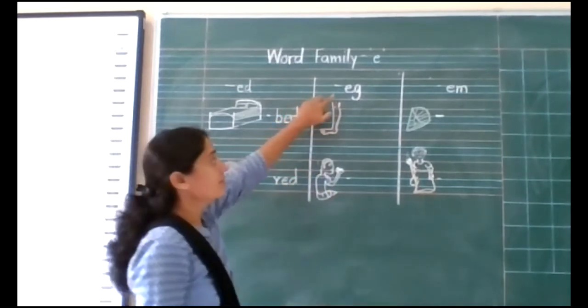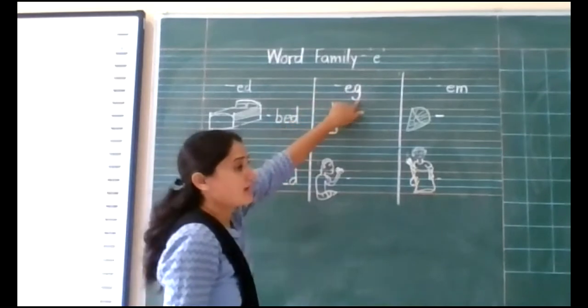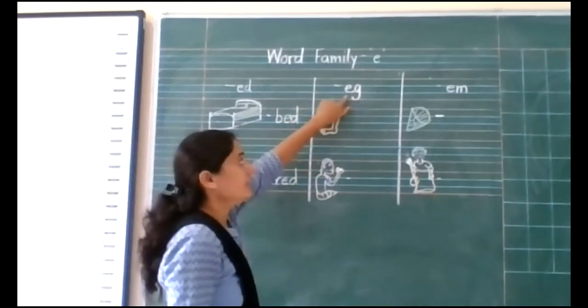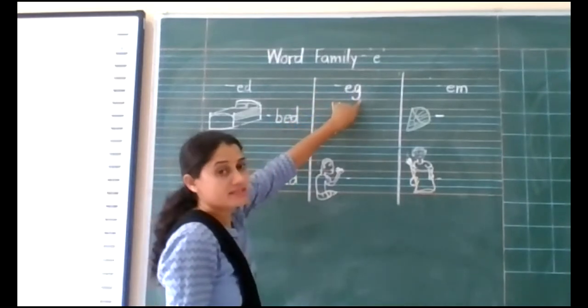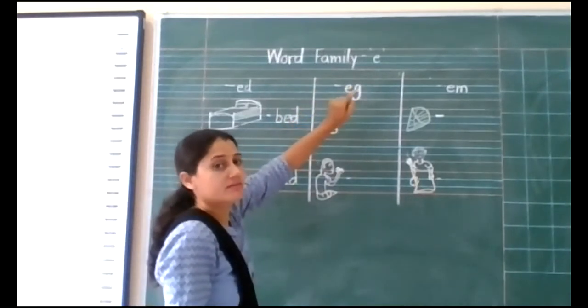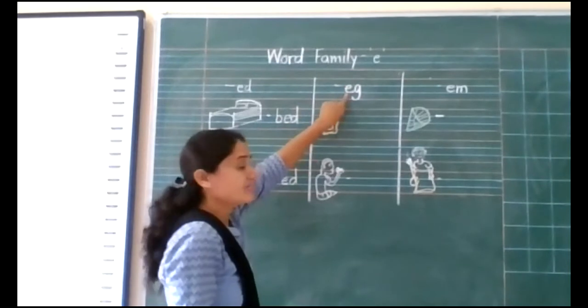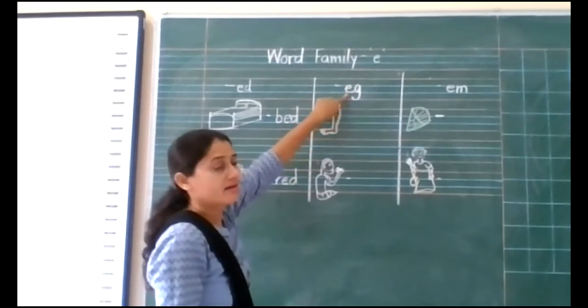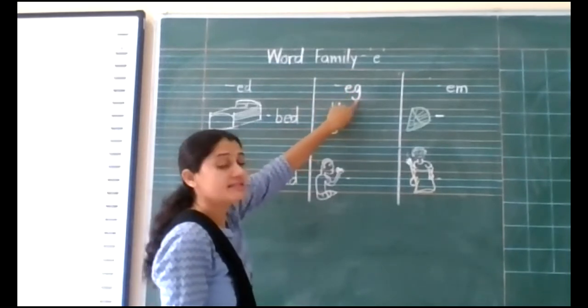The next sound is the EG sound. E and G make the sound EG. E says EG, and G says G.